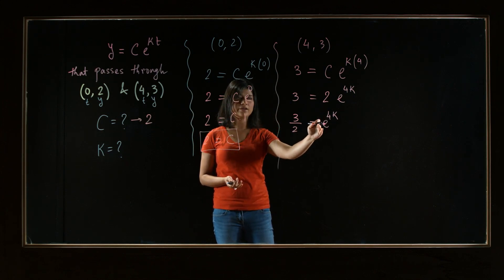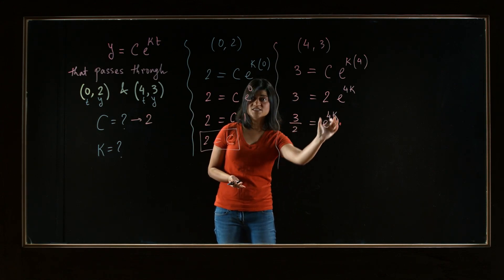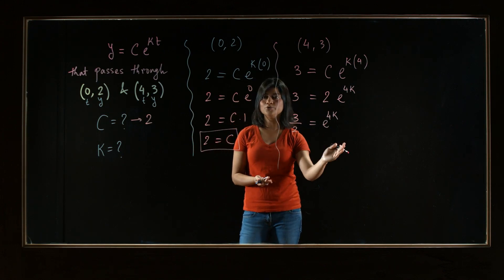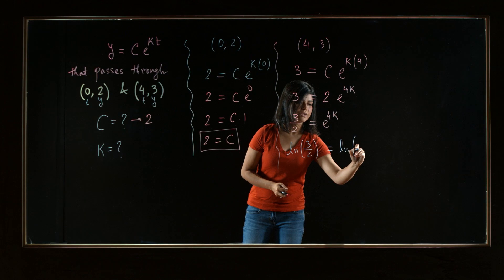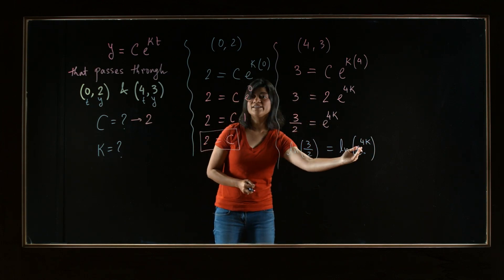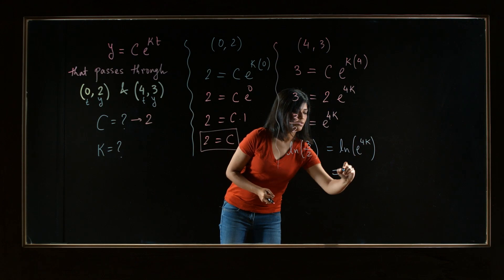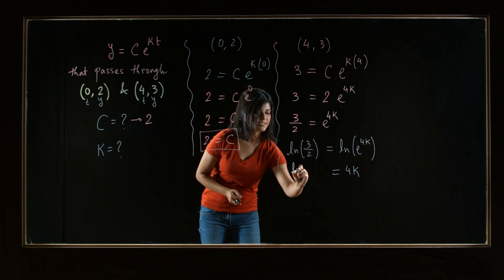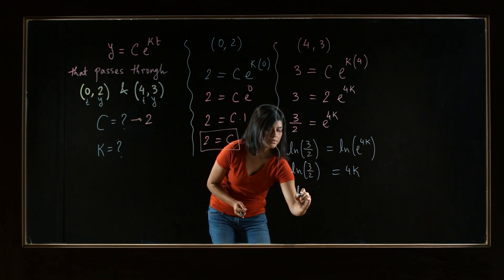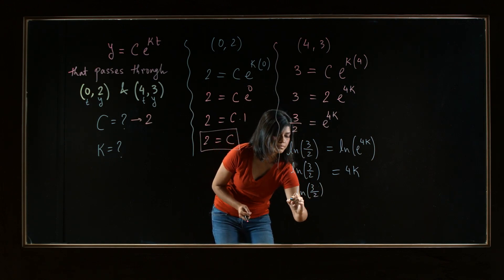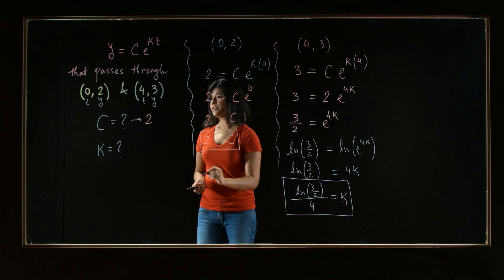Now how do we solve for k from there? Notice that this is an exponential function, an equation involving that. And in order to bring down the k from the exponent, we have to apply natural log to both sides. So apply natural log to the left side and to the right side. And from the inverse properties of natural log and exponential function, you know that they kind of cancel each other. And so the right hand side will just become whatever is in the exponent. And left hand side remains natural log of 3/2. So solve for k just by dividing by 4 both sides. That is the value of k. Natural log of 3/2 divided by 4.